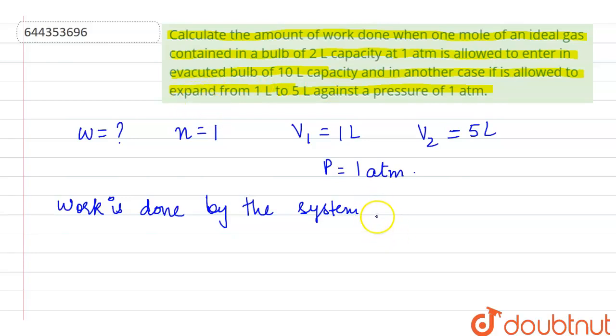So the work is done by the system, and as the expansion is done, the equation of work done is given by W equals minus P delta V.